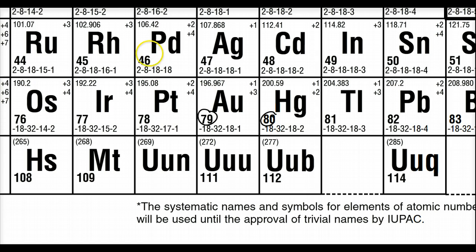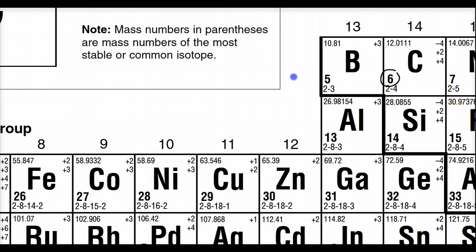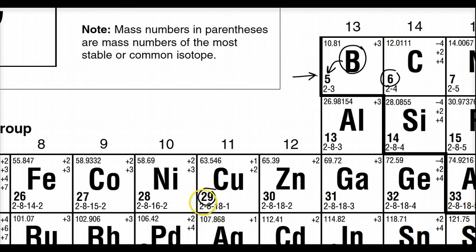Every single element listed is a group of the same type of atoms. Tin, also called stanum in Latin, has 50 protons — nobody else has 50. Every single symbol has a unique atomic number. The periodic table goes in order of atomic number, which is the proton number. So every element has a unique symbol associated with a unique number of protons.